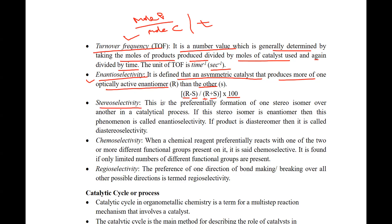Stereoselectivity is the preferential formation of one stereoisomer in a catalytic process. Stereoisomers can be diastereomers or enantiomers. If the preferred stereoisomer is an enantiomer, it is known as enantioselectivity. If the product is a diastereomer, then it is known as diastereoselectivity.